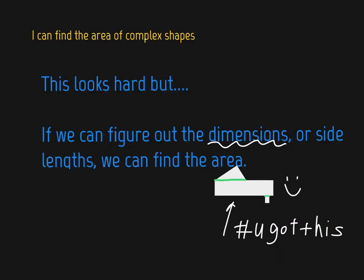So once again, working with complex shapes, there are shapes with more than one shape in them, and we can divide them up and find the areas of those individual shapes in order to find the entire area of it using the dimensions. So you can do this.